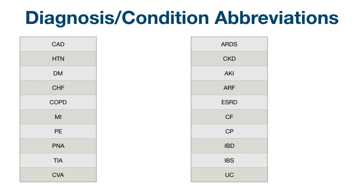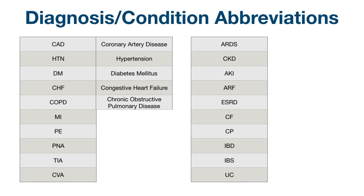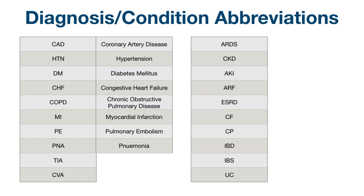Next, we have abbreviations for different diagnoses or conditions. Hit pause in the video and try to name as many as you can. CAD: coronary artery disease. HTN: hypertension. DM: diabetes mellitus. CHF: congestive heart failure. COPD: chronic obstructive pulmonary disease. MI: myocardial infarction. PE: pulmonary embolism. PNA: pneumonia. TIA: transient ischemic attack.